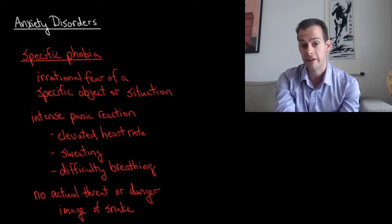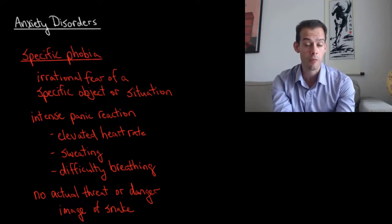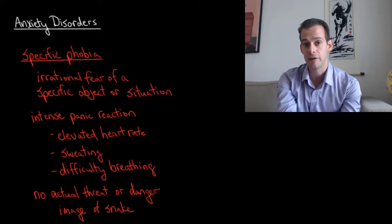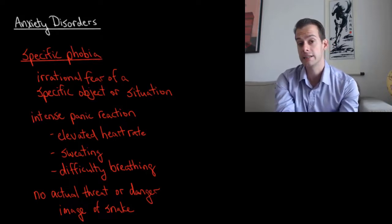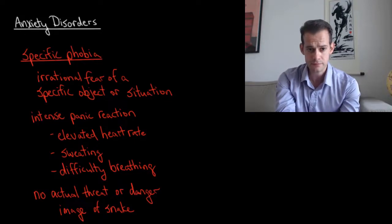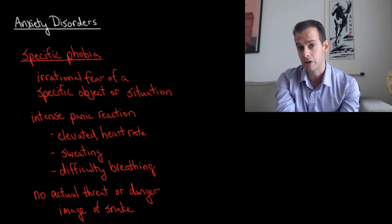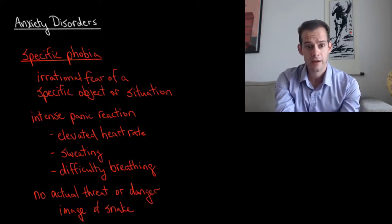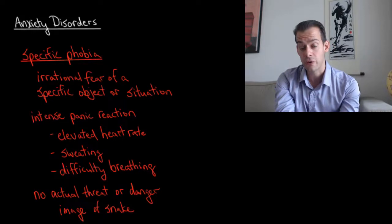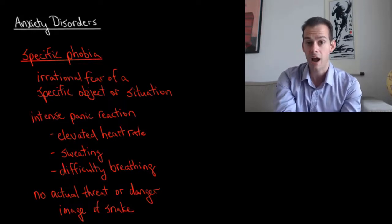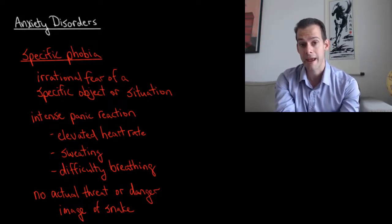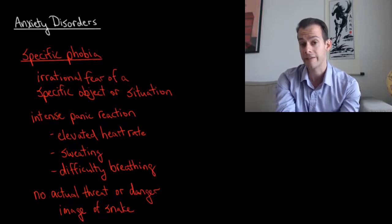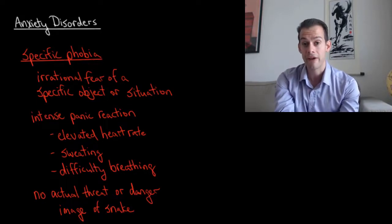So we'll start with specific phobias. In a specific phobia a person has an irrational fear of a specific object or situation. So that object might be something like snakes or that situation could be something like being in an enclosed space like an elevator. In this specific situation or in the presence of this specific object the person will have an intense panic reaction. They'll have an elevated heart rate, sweating, and difficulty breathing.